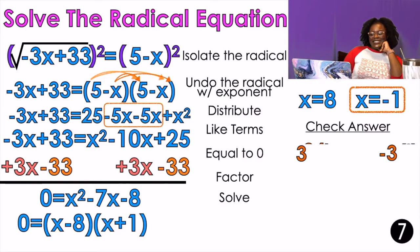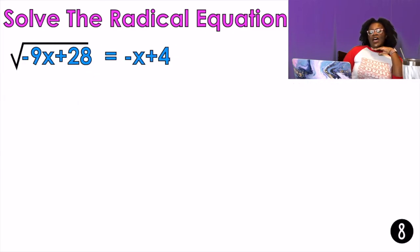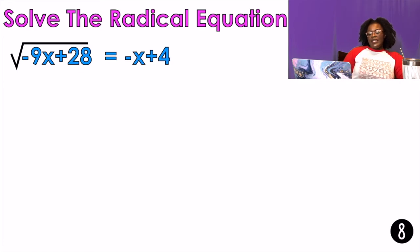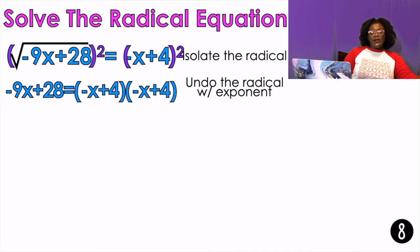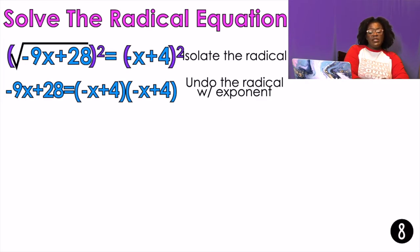x equals negative 1 is my only answer; the other one is extraneous. Example number 8 — the last example. My radical is already isolated, so I'm going to undo the radical with an exponent — I need to square it. On the right-hand side when I square, I have to double distribute because there's a plus sign in the middle. If it was just negative 4x with no plus, I could write 16x squared, but I have to FOIL.